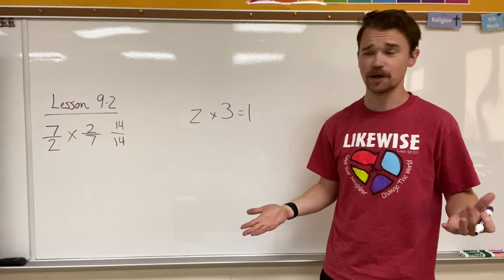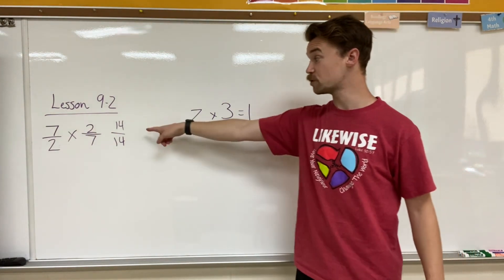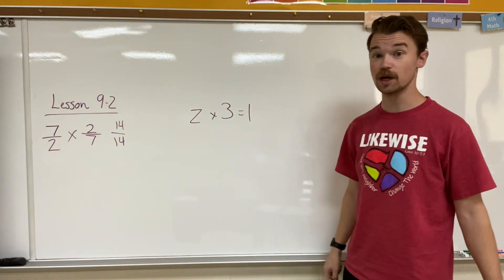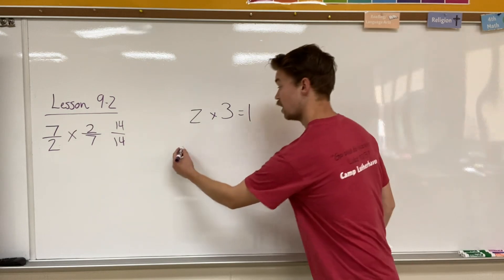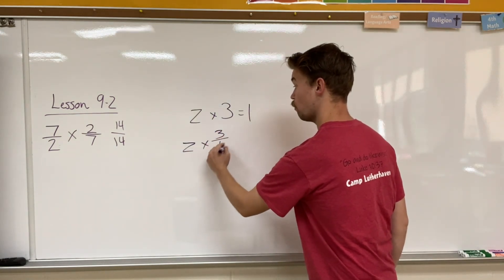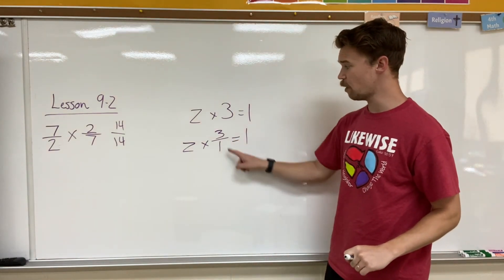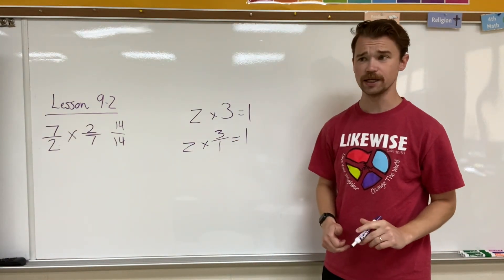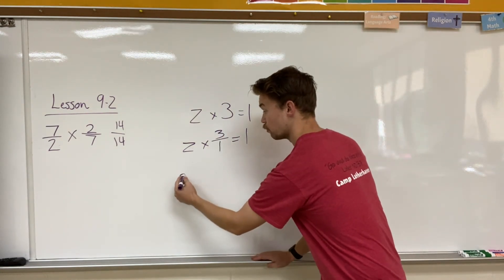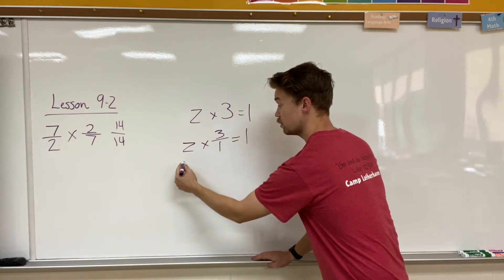You might see a problem like this on your work: Z times 3 equals 1. Now, we know when it comes to reciprocals, they always equal 1. So I need to change this whole number into a fraction. I'm going to have Z times 3 over 1 — for a whole number, I can put it over 1 to make it a fraction. Now I need to figure out what the reciprocal of 3 over 1 is. I flip the numerator and the denominator around, so instead of 3 being on the top, 3 would be on the bottom, and instead of 1 being on the bottom, 1 will be on the top.